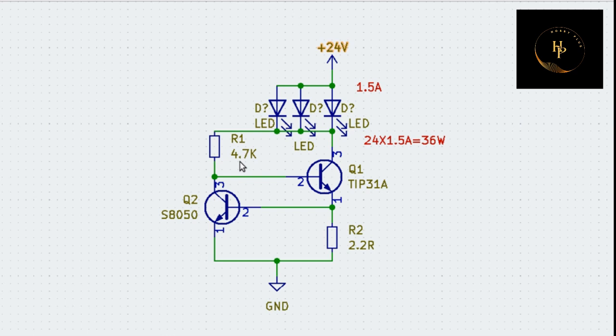The acceptable range for this resistance is around 3.3k, 4.4k, 4.7k, or 4.2k — no problem at all. But do not make this resistance too high or too low — that is the main point of this video. I think you understand. If this video is helpful, please like and subscribe. Thank you very much.